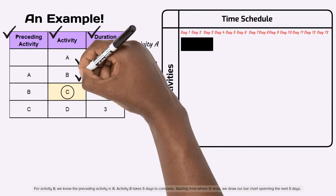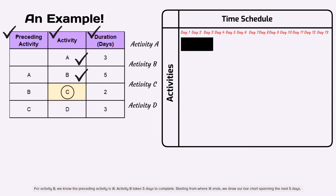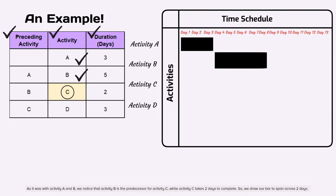For activity B, we know the preceding activity is A. Activity B takes five days to complete. Starting from where A ends, we draw our bar chart spanning the next five days.